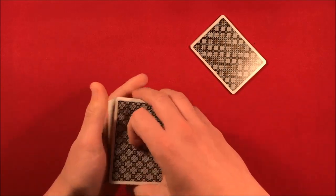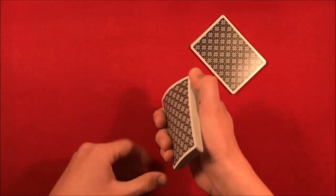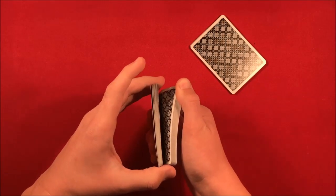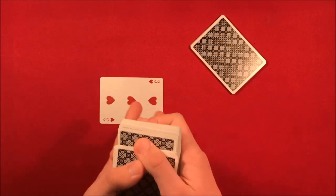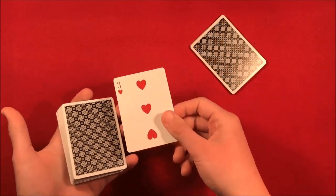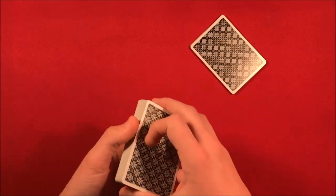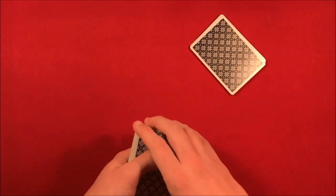And I'll leave a link so you guys can do that. So the spectator can say stop, you're just basically forcing that top card, the three, on the spectator. You say, okay, so you stopped me at a three. So what I'm going to do here is mix it up there, I'm going to put three cards into this packet.